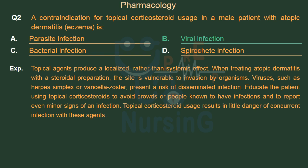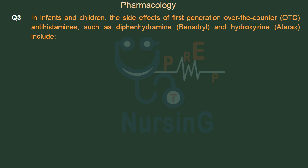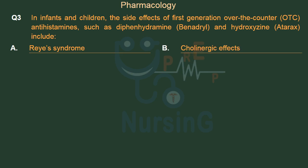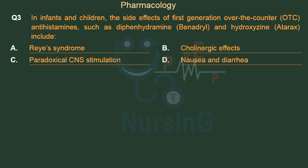Topical corticosteroid usage results in little danger of concurrent infection with these agents. In infants and children, the side effects of first-generation over-the-counter (OTC) antihistamines, such as diphenhydramine (Benadryl) and hydroxyzine (Atarax), include: Option A: Reye's syndrome. Option B: Cholinergic effects. Option C: Paradoxical CNS stimulation. Option D: Nausea and diarrhea. The right answer is Option C: Paradoxical CNS stimulation.